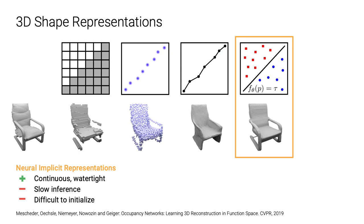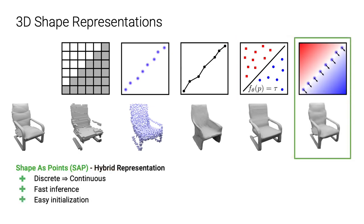Neuroimplicit representations are able to produce smooth and high-quality shapes. However, because they require numerous network evaluations in 3D space, extracting the underlying surface is typically very slow. Moreover, it's non-trivial how to initialize the network weights with given observations. In this work, we introduce SAP as an alternative shape representation with multiple advantages. First, SAP has a low memory footprint because it only requires storing a collection of oriented surface points. Second, with the proposed differentiable Poisson solver, we can very efficiently map point clouds to a dense indicator function during inference. Last but not least, SAP is topology agnostic and easy to initialize with any given geometry, such as noisy or incomplete observations.